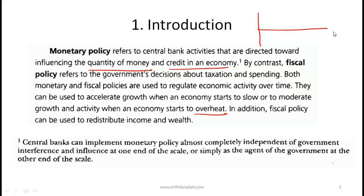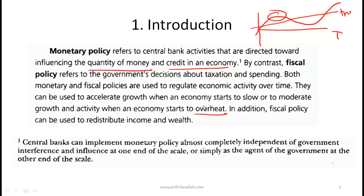To tie this to the previous reading on business cycles: over time, economic activity fluctuates. When the economy is above its normal trend, it's considered overheated. At that point, the government tries to hold the economy back using a tight monetary policy and what's generally called a contractionary fiscal policy. These terms will come up repeatedly.